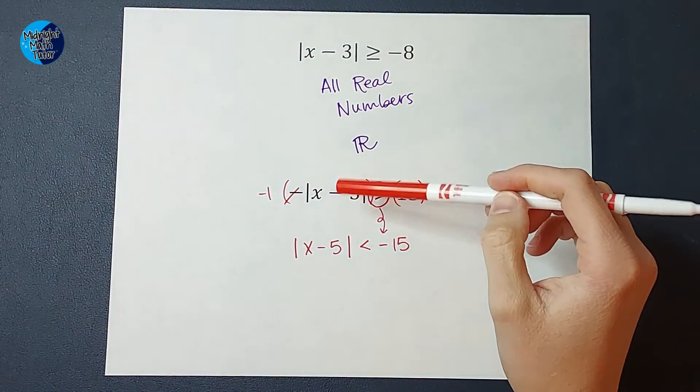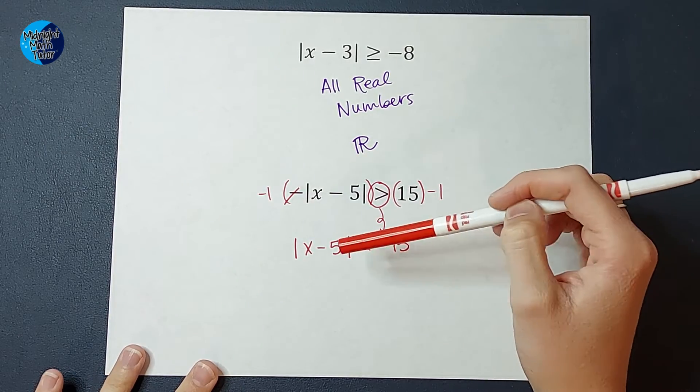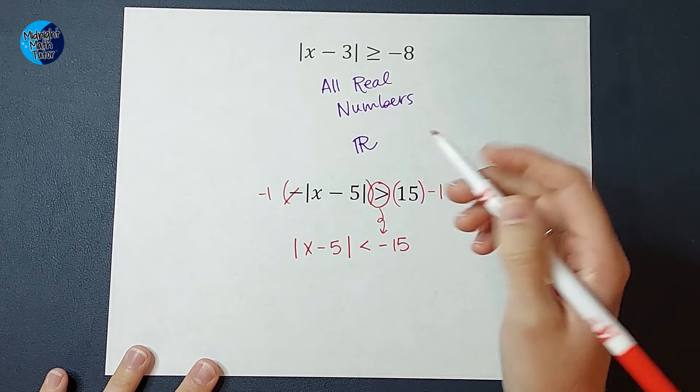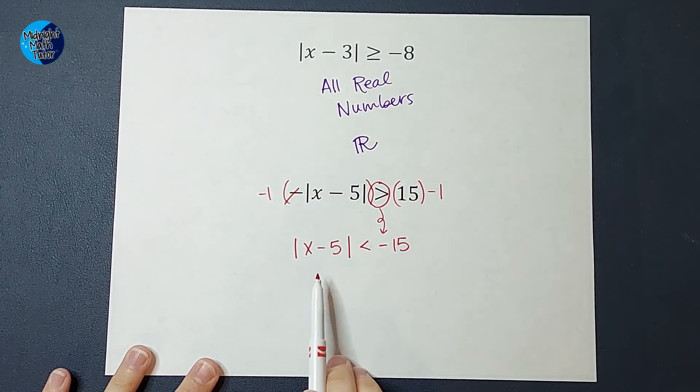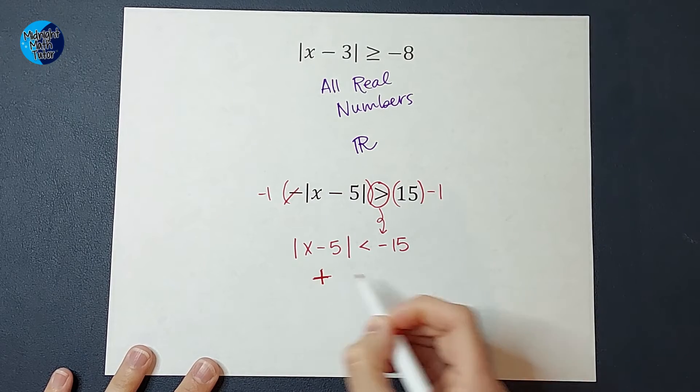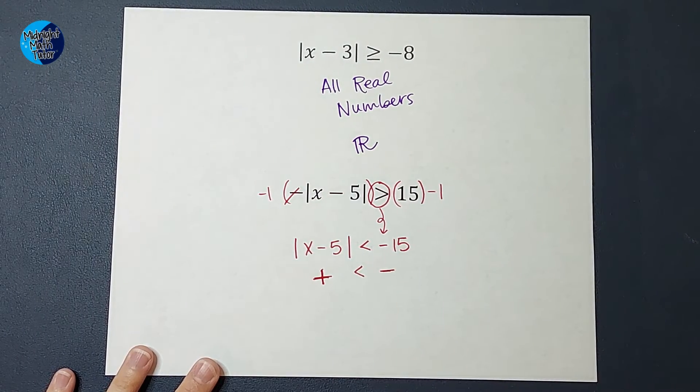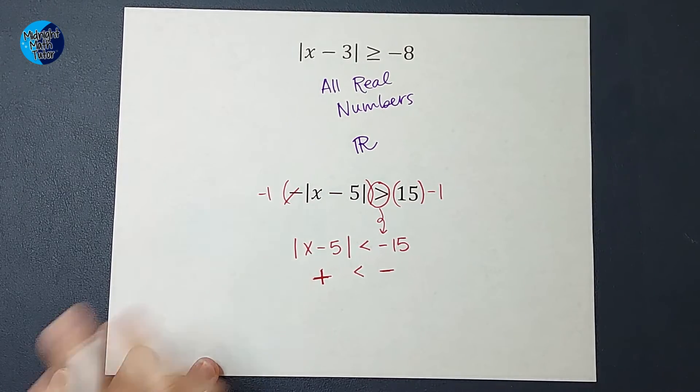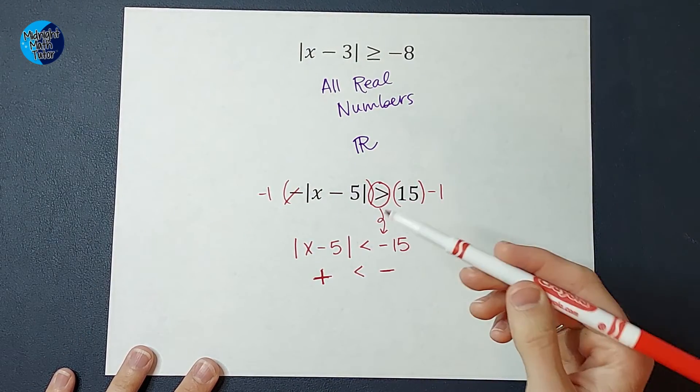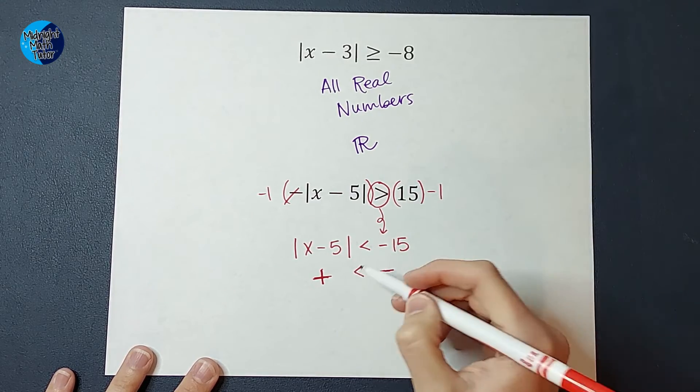Well, let's look at this. Remember the answer to an absolute value is always going to be positive. So whatever I plug in, this is going to be positive. Well, is a positive number ever going to be less than a negative number? No, it's not. There's no number I could plug in here that would give me the absolute value that will be less than negative 15.